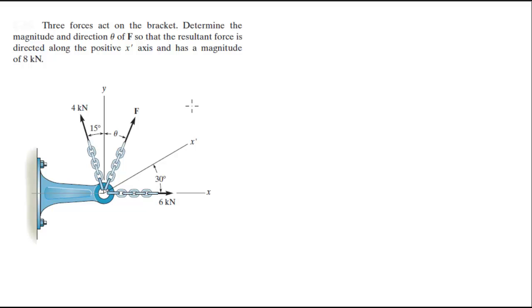Alright guys, let's do this problem which says three forces act on the bracket. Determine the magnitude and direction theta of f so that the resultant force is directed along the x prime axis and has a magnitude of 8k. So the magnitude is going to be more or less 8k, bigger than the others.